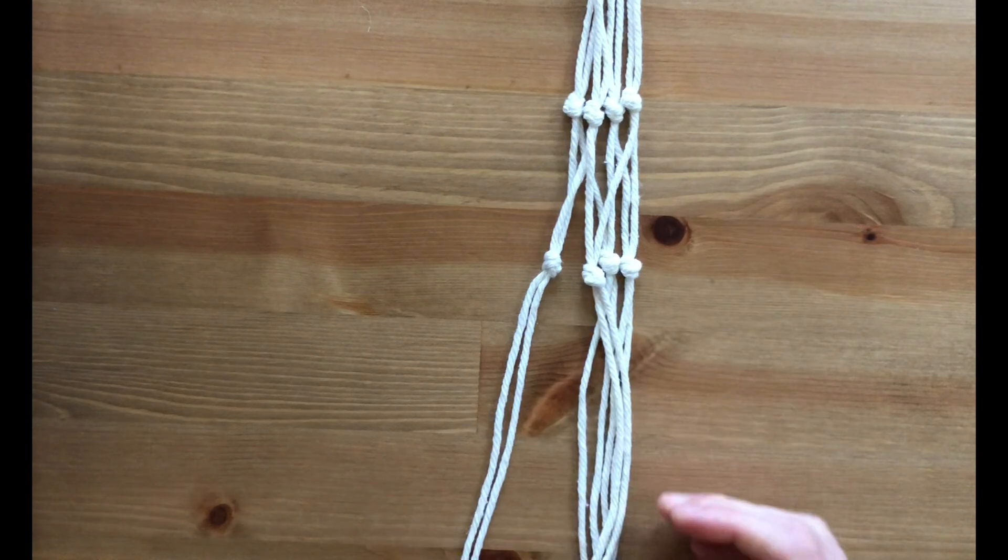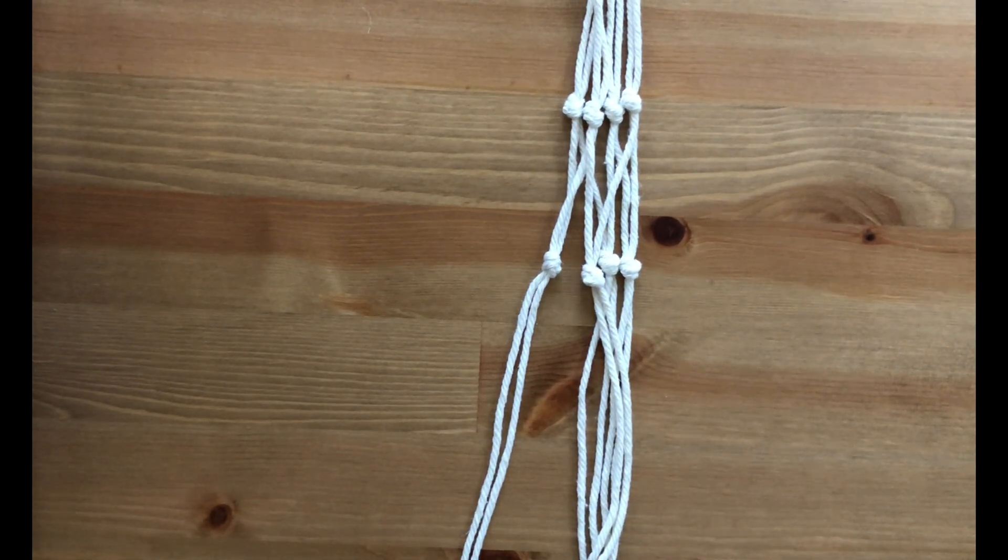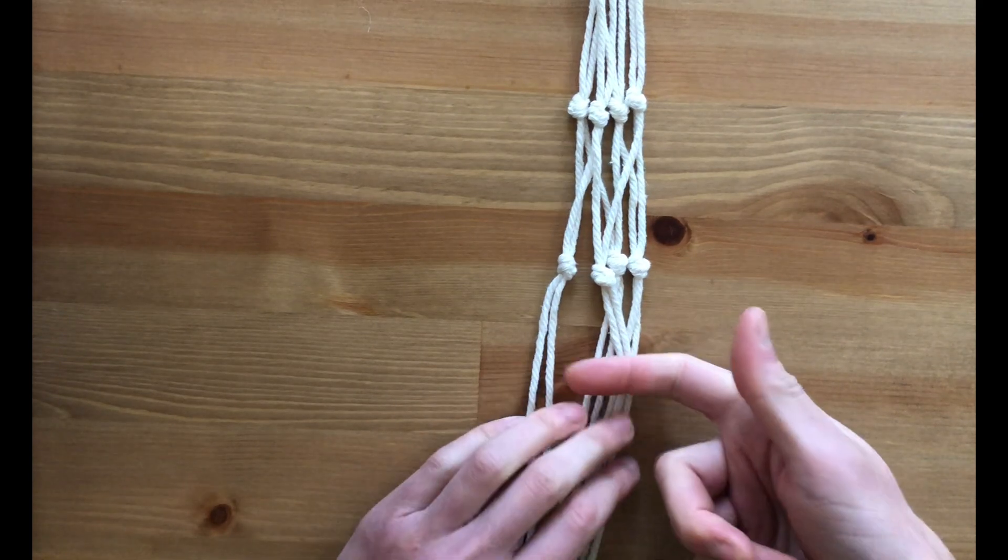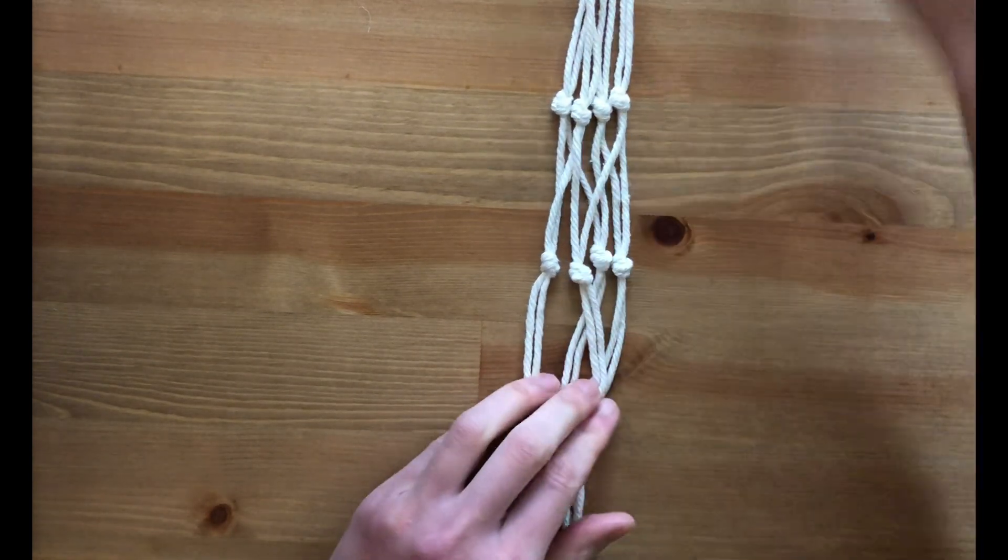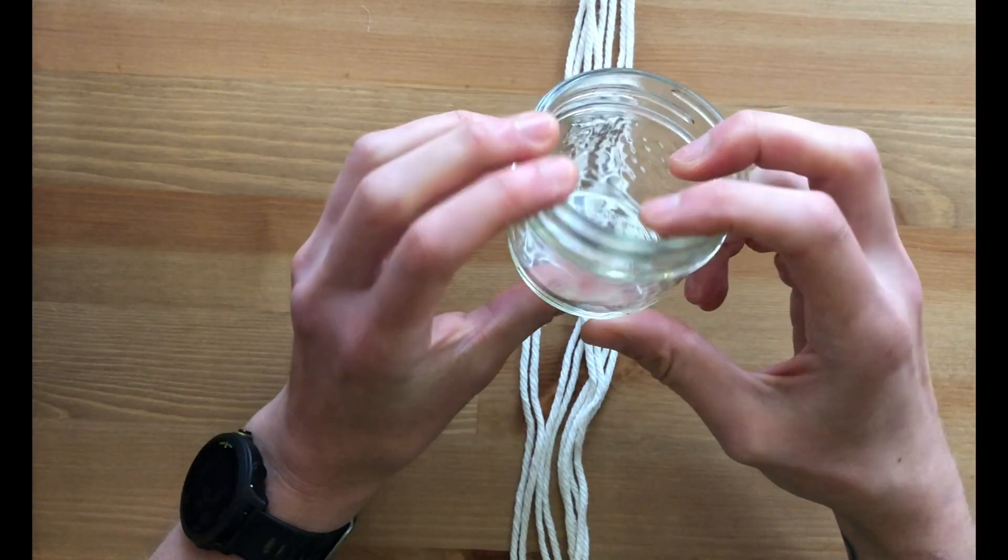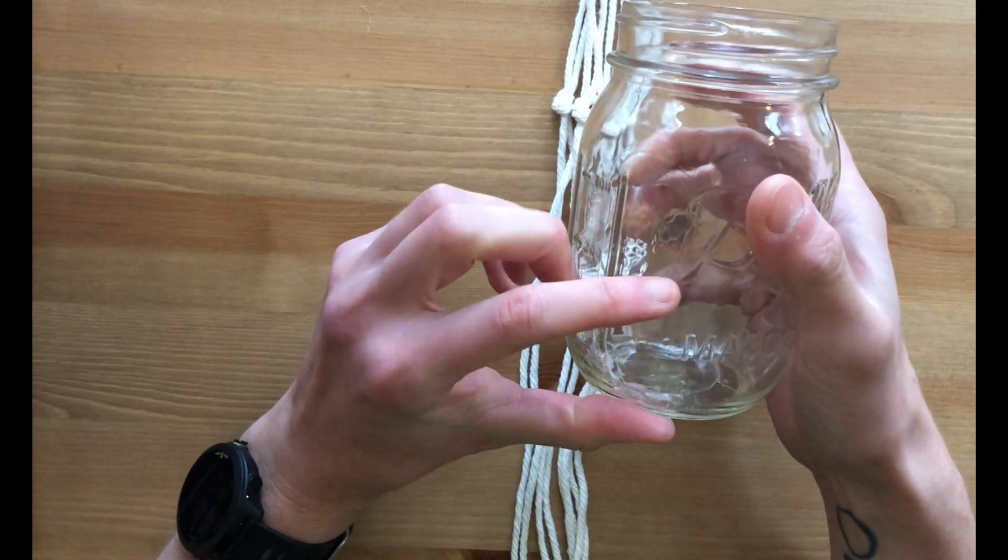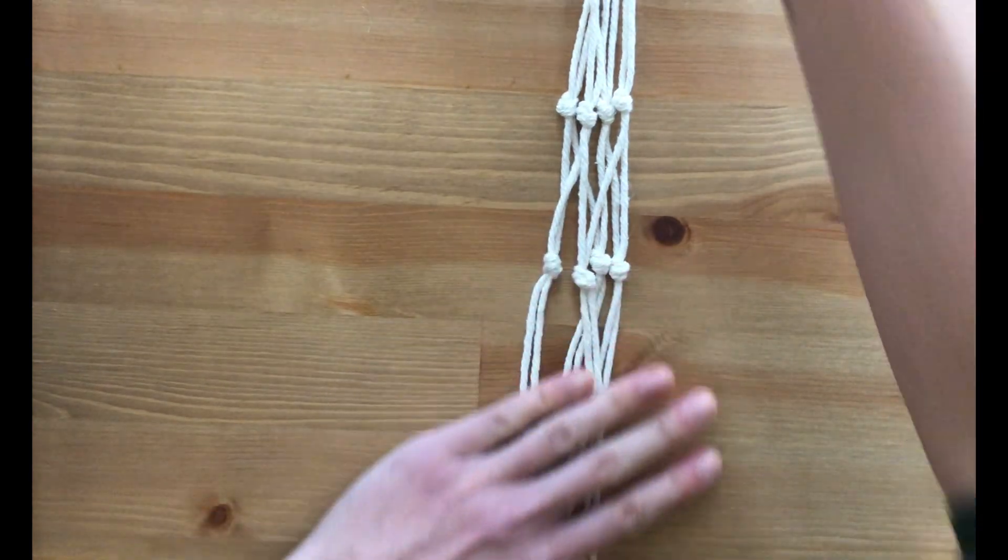All right, so that is our second row of knots, and we're going to do one more row of knots. These knots I'm going to try to get a little bit closer, especially if you have a smaller jar. But if you're using a larger jar, it's okay if they're not super close.